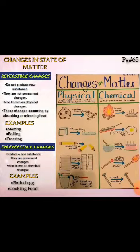Reversible changes are also known as physical changes. Examples are melting, boiling, and freezing. The second type is irreversible changes. In irreversible changes, totally new substances are produced and the chemical composition of the substance changes. These changes are permanent.